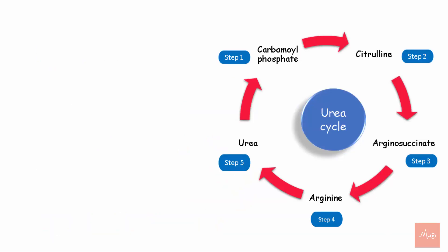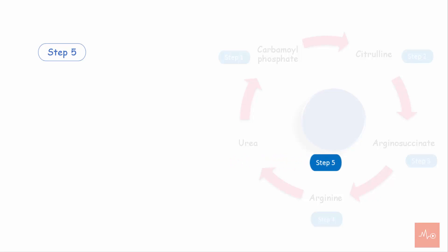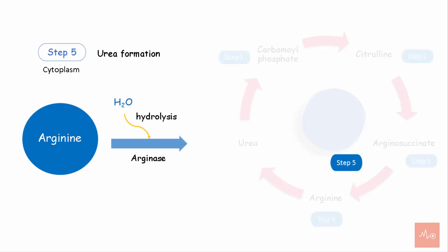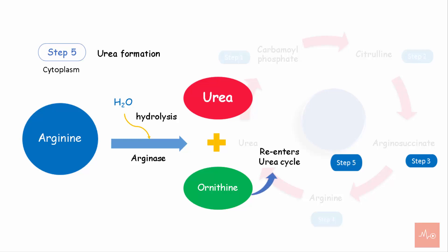Step 5 occurs in the cytoplasm and is the formation of urea. Arginine is hydrolyzed by the enzyme arginase to form urea and ornithine. Ornithine enters the mitochondria and is reused in the urea cycle. The urea that is formed is transported to the kidneys via blood and excreted in urine.